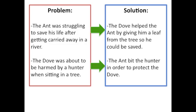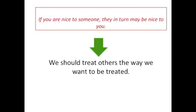After reading this story, I can see that both characters faced big problems. The ant was struggling to save his life after getting carried away in a river. The dove was about to be harmed by a hunter when sitting in a tree. In order to overcome these problems, each character helped each other. The dove helped the ant by giving him a leaf from the tree so he could be saved, and the ant bit the hunter in order to protect the dove. After looking at the problem and solution to the story, I can tell that the author wants us to learn something. The theme or author's message was listed at the bottom of the story. Let's take a look at the theme.